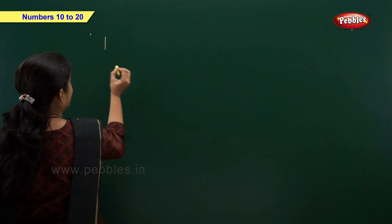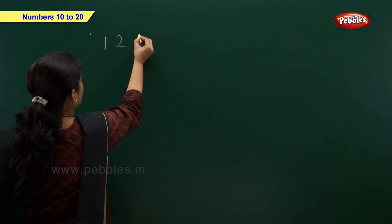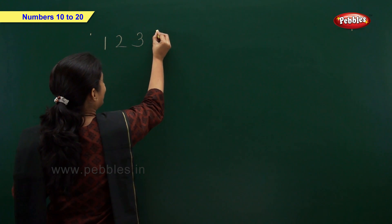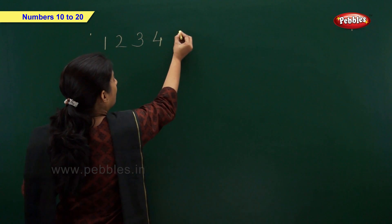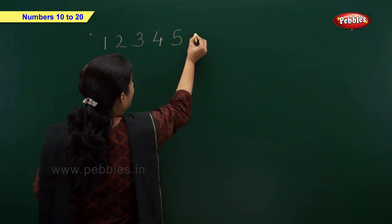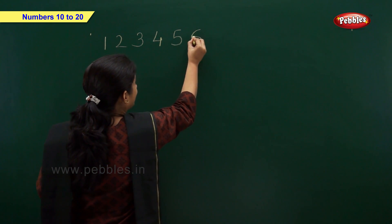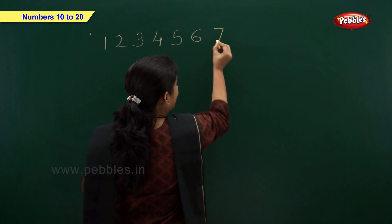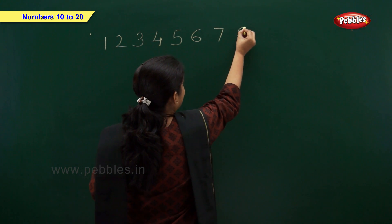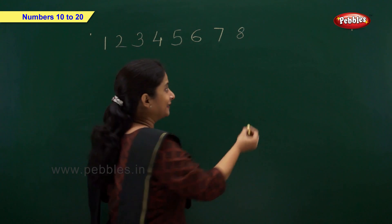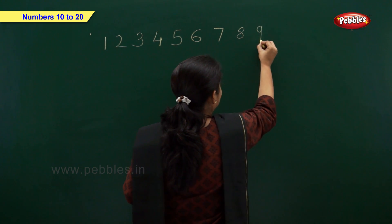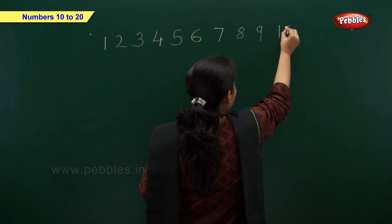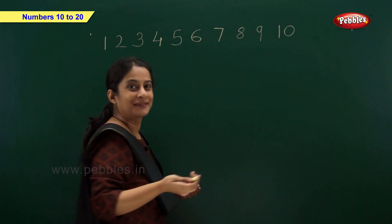1, 2, 3, 4, 5, 6, 7, 8, 9, and 1 and 0 — 10.